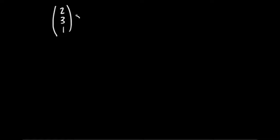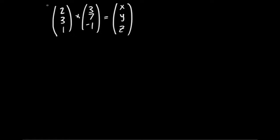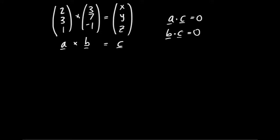How to check your cross product has been worked out correctly. Let's do another example: a = (2, 3, 1) and b = (3, 7, minus 1), giving some result (x, y, z). It turns out there's a very interesting property of vector c that we get out after the operation if we've done it correctly: a dotted with vector c is 0, and so is b. Either of the input vectors a and b dotted with the correct cross product c should give us 0. The dot product is very easy to work out as a check.